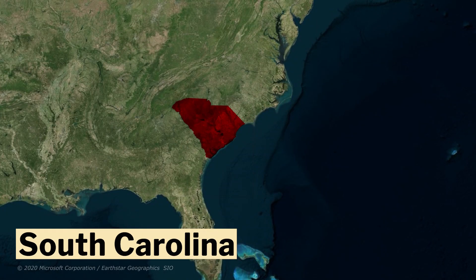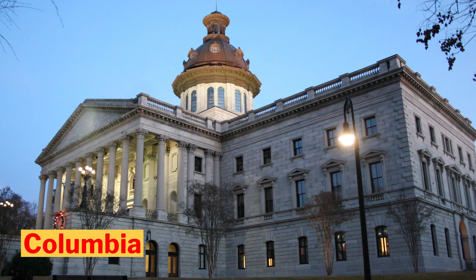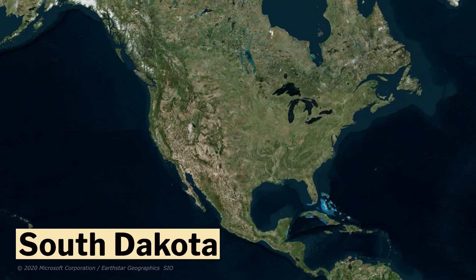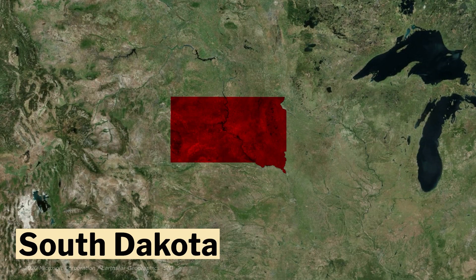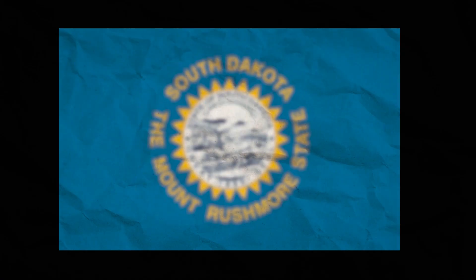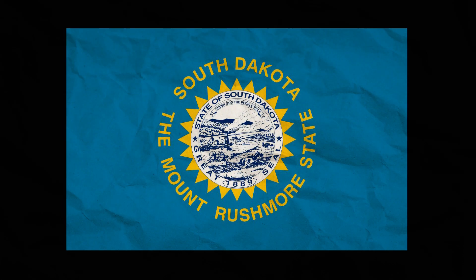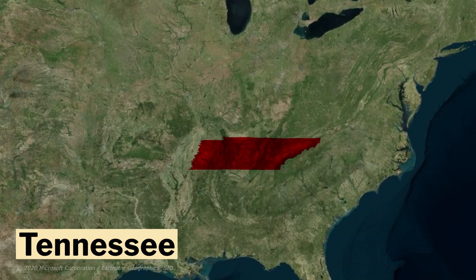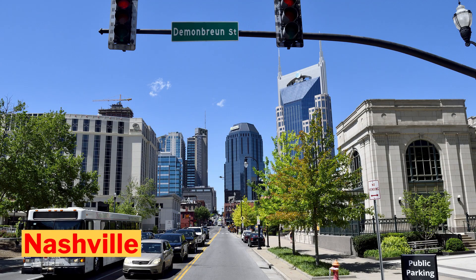Number 40, South Carolina. Its capital is Columbia. This is the flag of South Carolina. Number 41, South Dakota. Its capital is Pierre. This is the flag of South Dakota. Number 42, Tennessee. Its capital is Nashville. This is the flag of Tennessee.